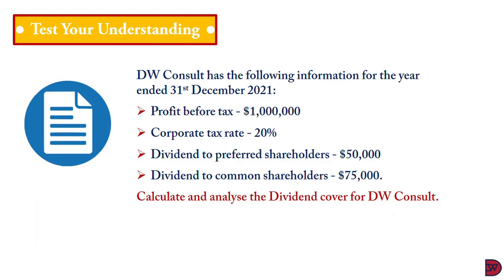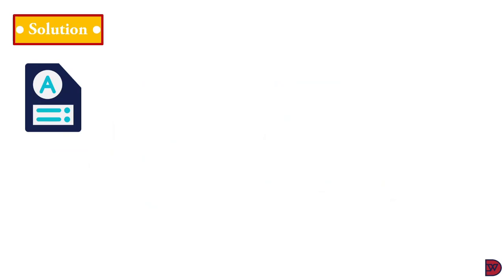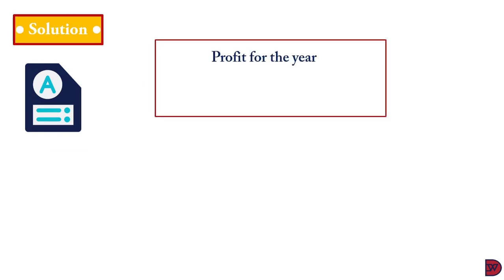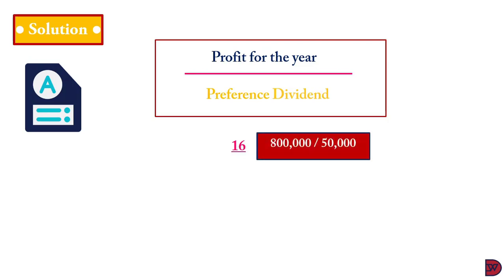Let's look at a worked example. DW Consort has the following information for the year ended 31 December 2021: profit before tax of $1,000,000; corporate tax rate of 20%; dividend to preference shareholders of $50,000; dividend to common shareholders of $75,000. Using the formula — profit for the year divided by preference dividend — we get a dividend cover of 16 for the preference shareholders, using a profit for the year of $800,000.